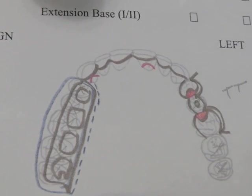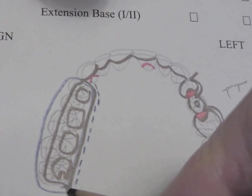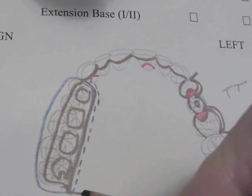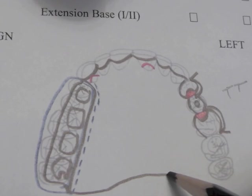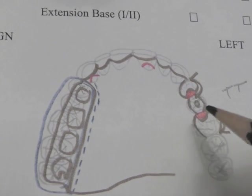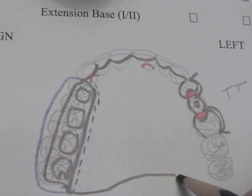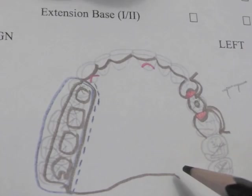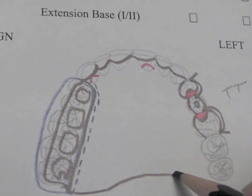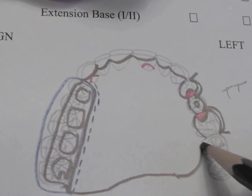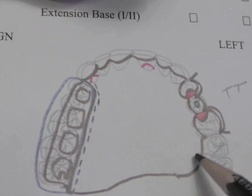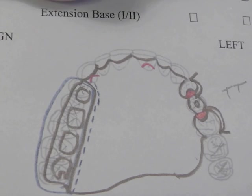Our major connector has to go to the hamular notch. It'll come across and we'd like to cross the palate perpendicular. We do not want to go past the vibrating line. It has to be on the anterior side of the vibrating line or else the palate will lift up away from the framework and water and debris will get under this partial framework very easily. So we come across perpendicular and then swing up and connect to our guide plate, our reciprocal component right there.